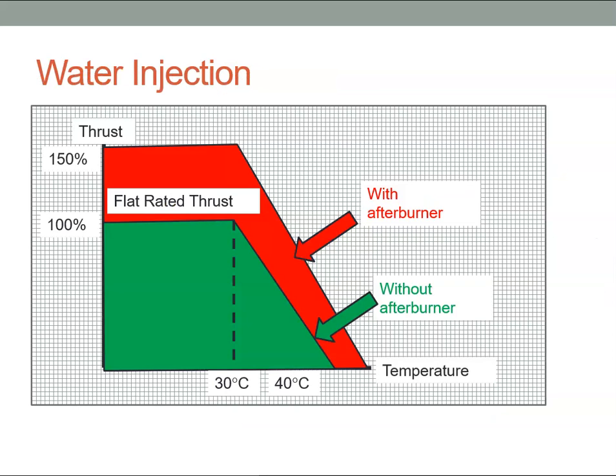And if we look at that on a graph, we can see if this was the flat-rated value of the engine, we get this amount of thrust up to about 30 degrees. But if we have the afterburner added, we can increase our thrust by up to 150%.